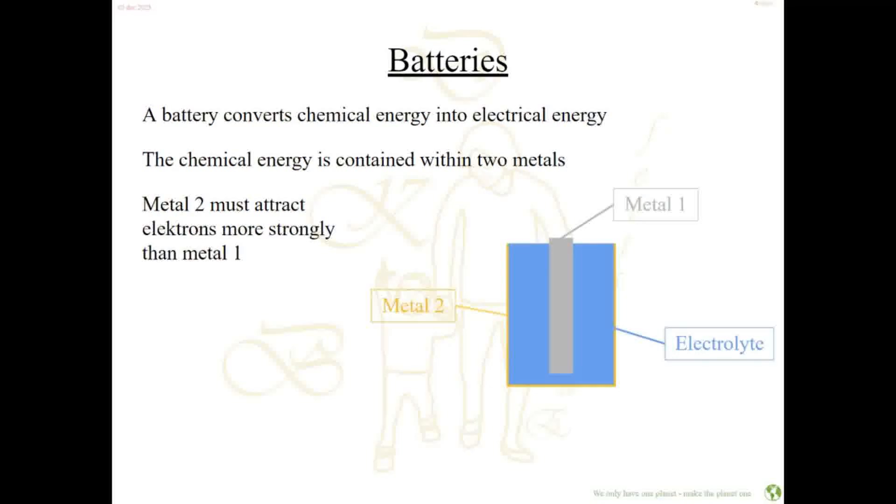Metal number two, the outside casing, must attract electrons more strongly than metal one. If one metal attracts electrons stronger than the other, the two metals will chemically react with each other. The chemical reaction between the two creates an electrical voltage.